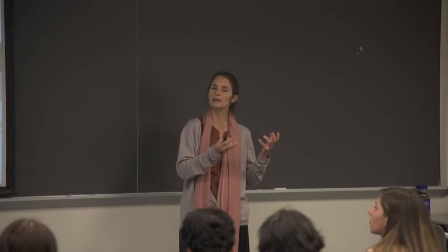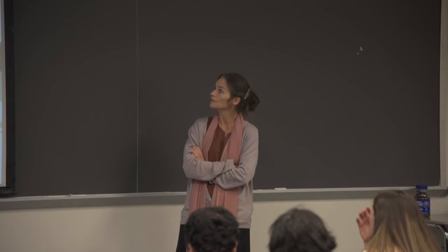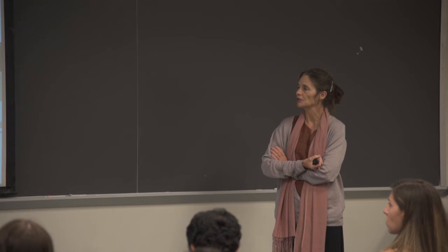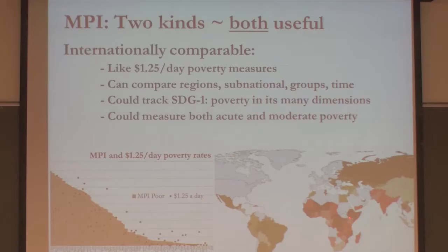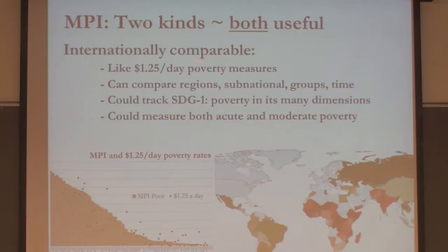It can be useful in tracking progress and learning from a range of situations. In the case of the MPI, it's much easier to go sub-national than it is in other measures. As you've seen, we can compare regions of Nigeria, South Sudan, or other countries, and look at sub-national groups like ethnic groups that have changed over time. So this, in a sense, is the global MPI.